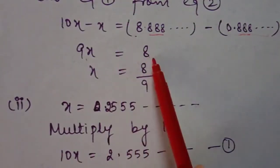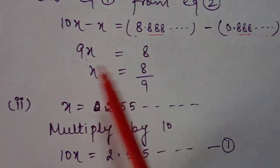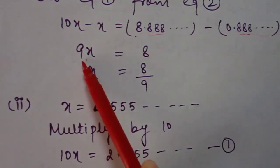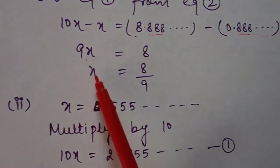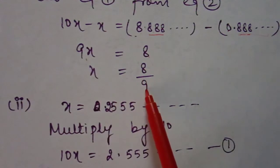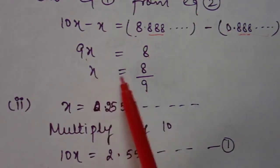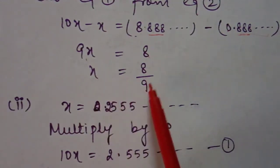So 9x equals 8, and since 9 is in multiplication we shift it to the other side as division, giving x equals 8 upon 9. So 0.8 bar is converted to the rational number 8/9.